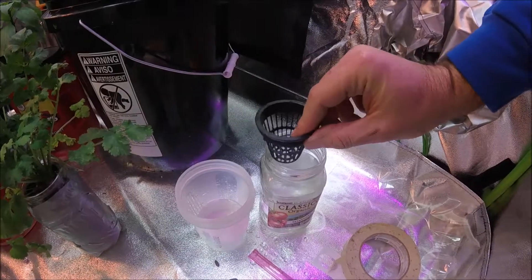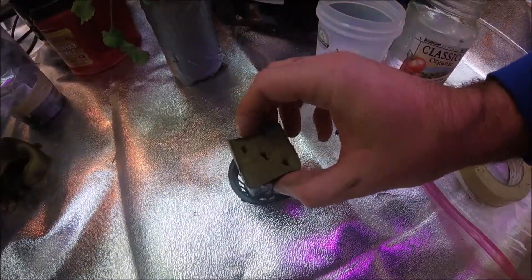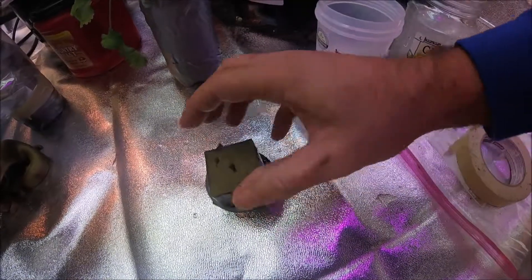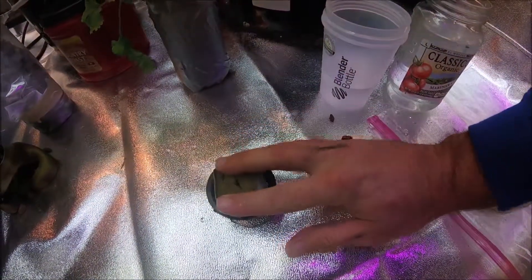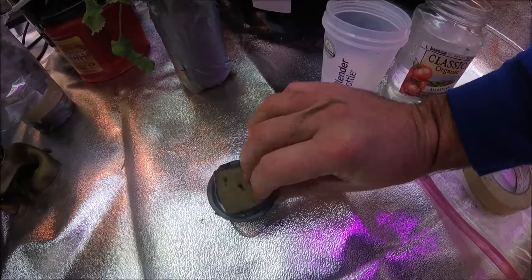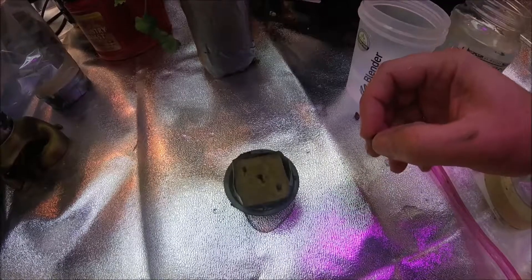A couple more drips there, and then we're going to take the net cup out and then we can set the rockwool cube down into the net cup. There we go. You don't need to squish it down in there as long as it's staying moist in the water, it'll be fine.